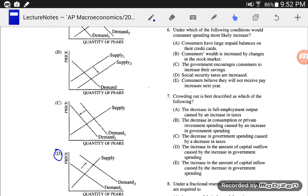Number six, under which of the following conditions would consumer spending most likely increase? Well, if they have large unpaid balances on their credit card, I don't think consumers are going to want to spend. They might need to pay off those credit cards. If consumers' wealth is increased by changes in the stock market, well, if they've got more wealth, they might be more likely to spend it because they feel like they have the security that they need. So I do like B. If the government encourages consumers to increase their savings, no, that would mean they save more and spend less. If Social Security taxes are increased, then people have less money to spend. And if consumers believe they will not receive pay increases next year, they're going to be a little more cautious with their money.